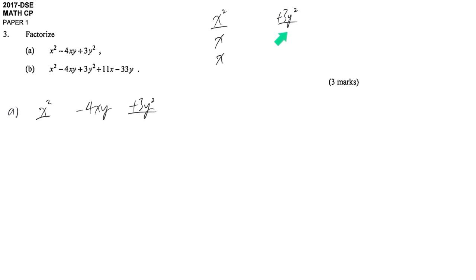Similar reason, we have to find two combinations so that we multiply will give us the last term. 3 is easy to handle, because it must be 1 times 3 or 3 times 1. So maybe I try 1y times 3y.